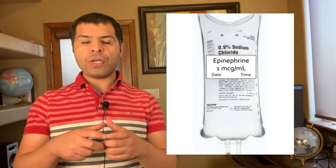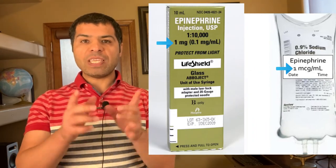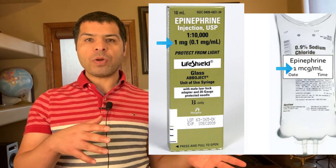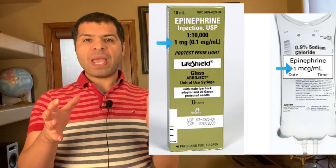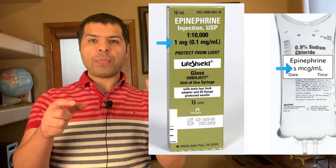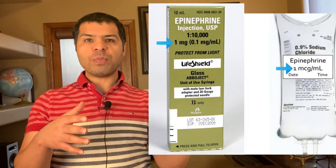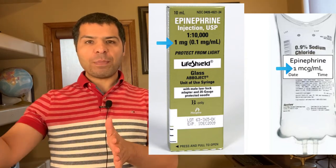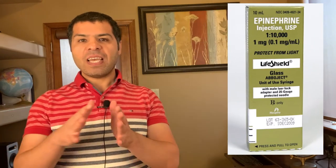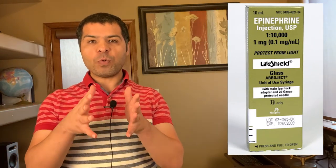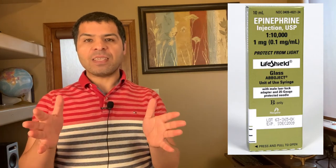Maybe your patient was already on an epinephrine drip and now is in cardiac arrest. Someone during the code may ask: the patient is already on an epinephrine drip — why do you keep giving epinephrine pushes? Simply: the epinephrine drip has a very small dose compared to the ampoule we use during a code. The ampoule has one milligram — that's 1,000 micrograms — pushed all at once. The epinephrine drip is dosed in micrograms per kg per minute, so to deliver 1,000 micrograms would take hours. Stop the epinephrine drip, keep it on standby, and rely on the epinephrine ampoules from the code cart.